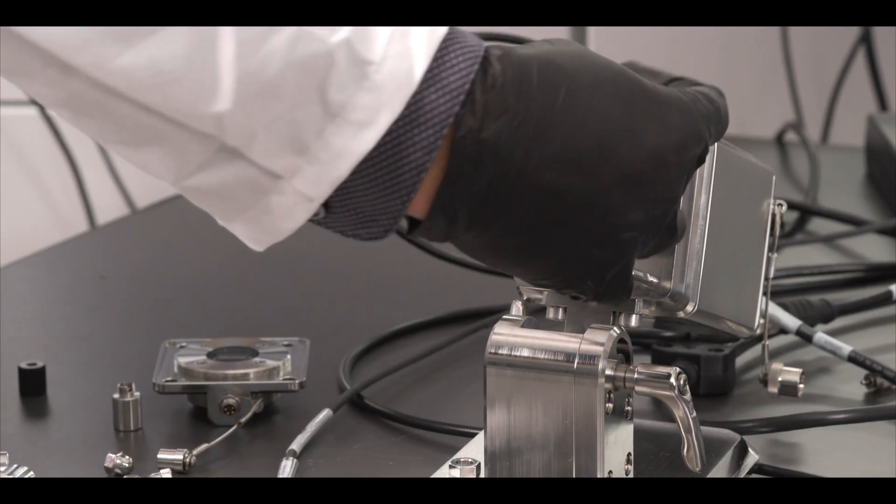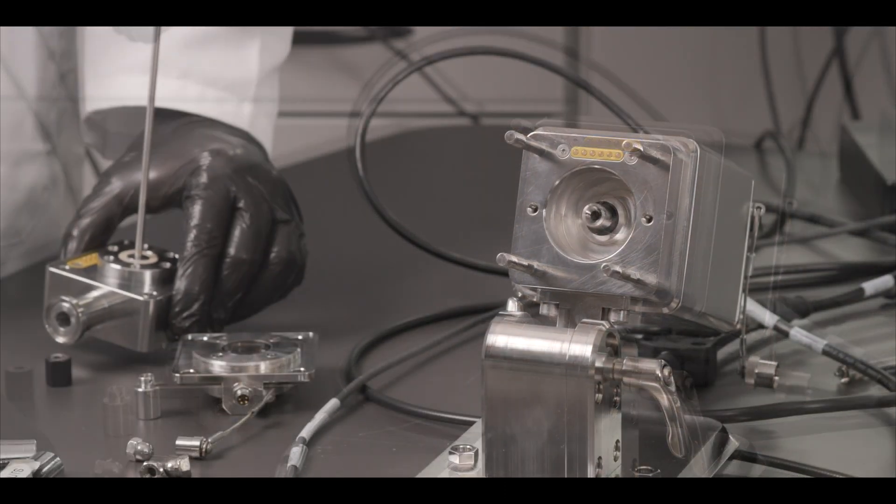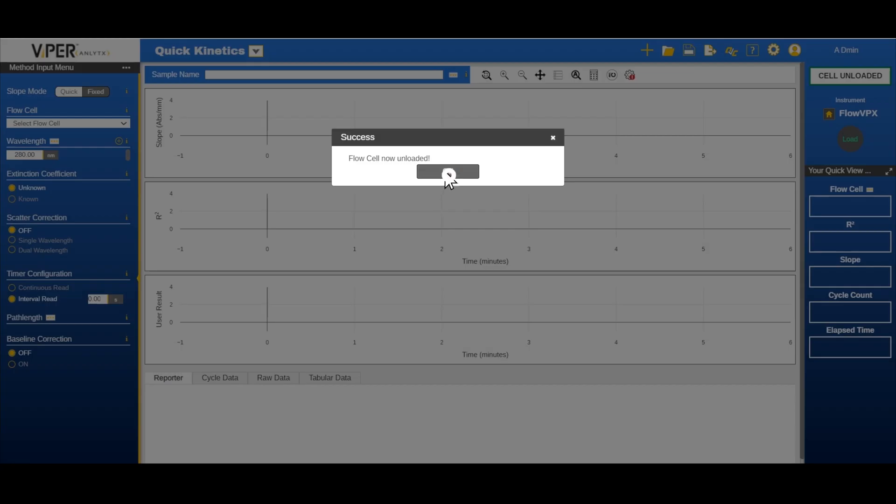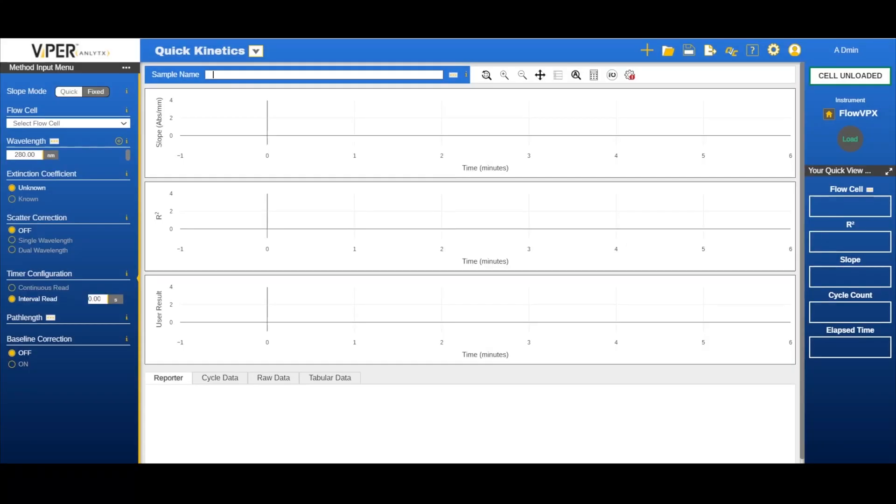Remove and discard the two disposable gaskets. Click OK in the software to complete the process. Congratulations, you've now finished unloading the flow cell.